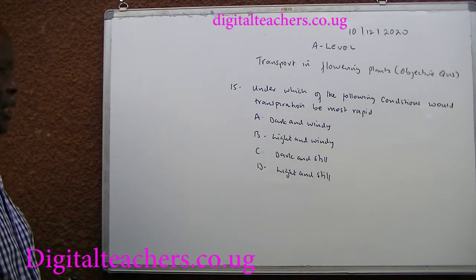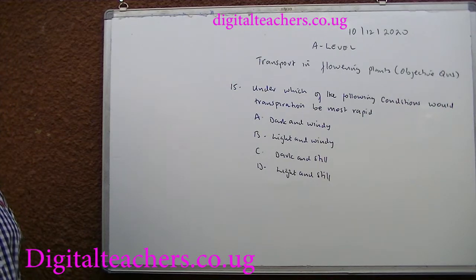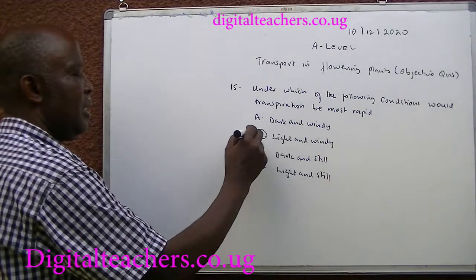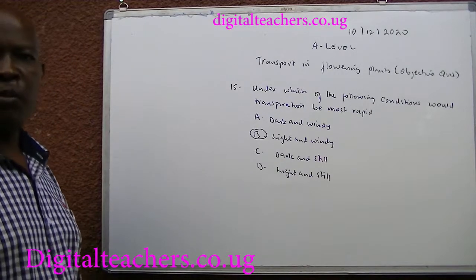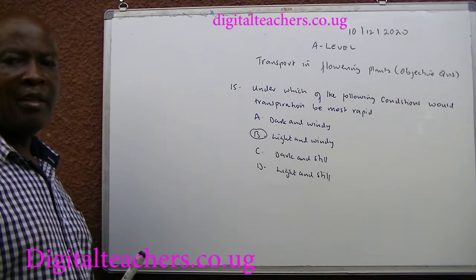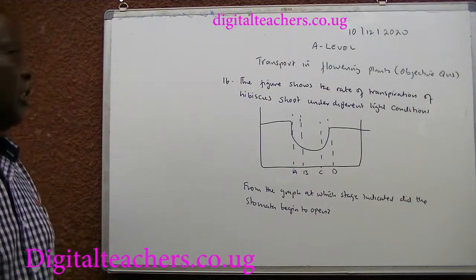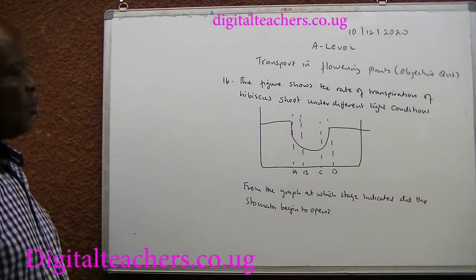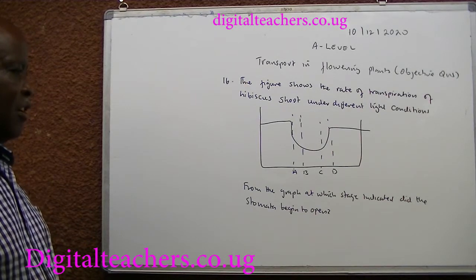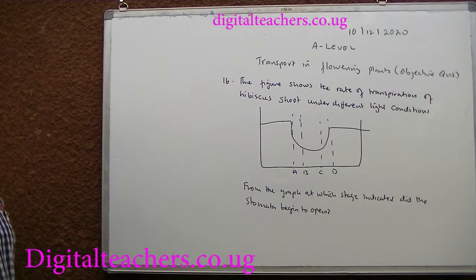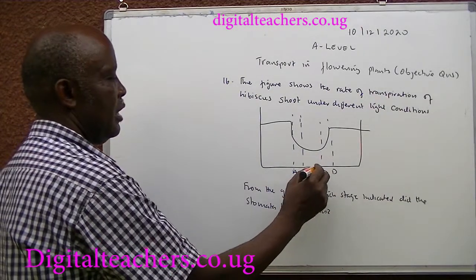Factors affecting transpiration include light, because it causes opening of the stomata, and wind, which blows away the humidity layer from the stomata. The figure shows the rate of transpiration of a hibiscus shoot under different light conditions. From the graph, at which stage indicated did the stomata begin to open? You can pause and answer. The answer is C.